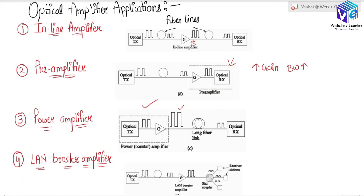The optical amplifier can also be used as a LAN booster amplifier. In a LAN, there will be coupler insertion losses and power splitting losses — power has to split into various receivers. This amplifier is used to compensate for these losses, and it is placed in front of the star coupler.